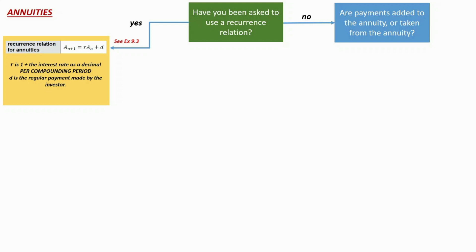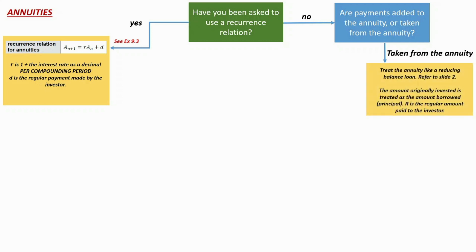If we're not asked to use a recurrence relation, we ask: are payments being added to the annuity or taken out? Annuities can be one of two types — one where you're saving up by putting $500 in each month for 20 years, or one where you've saved a million dollars as your pension and you're withdrawing a payment to live on over time. If you're taking money out of the annuity, you treat it like a reducing balance loan, since the same principles apply.